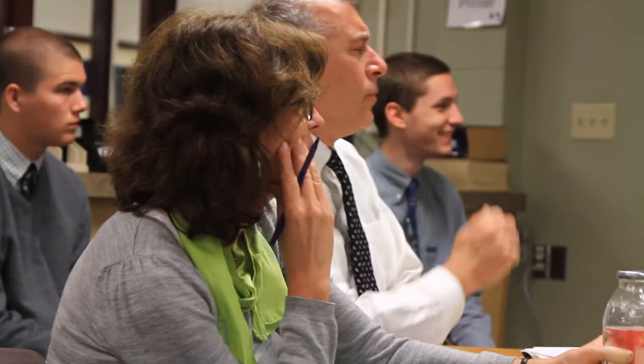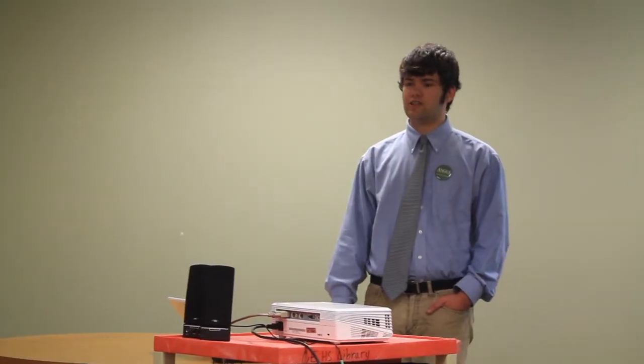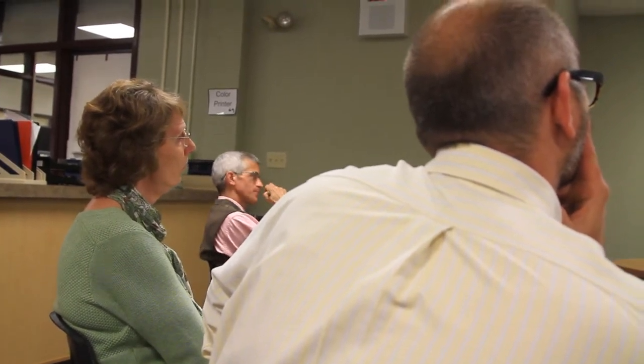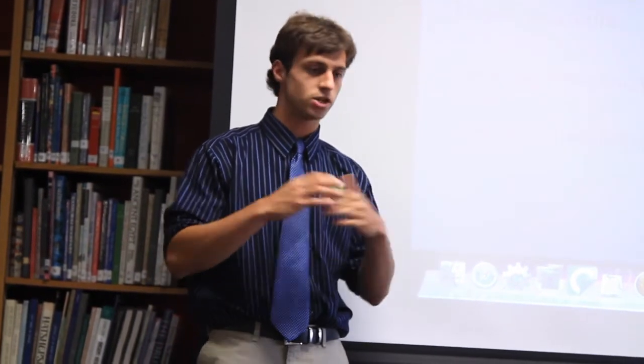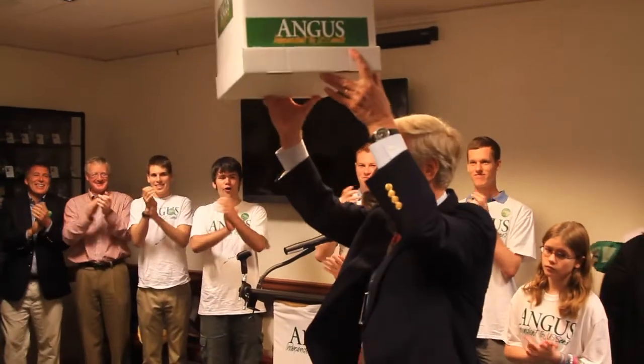So then we went this week to Augusta to deliver the signatures that we had gathered. A normal candidate needs 2,000 signatures to be put on the ballot. An independent candidate needs 4,000 signatures. And Angus King had gathered 6,500 signatures. We went up to that rally and there was a bunch of people up there, standing room. And when he was there, he gave a speech.